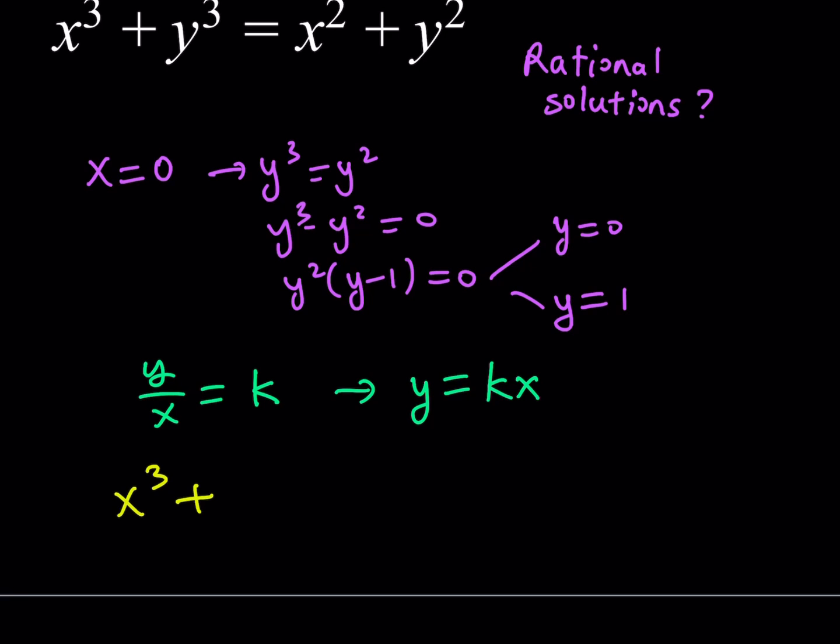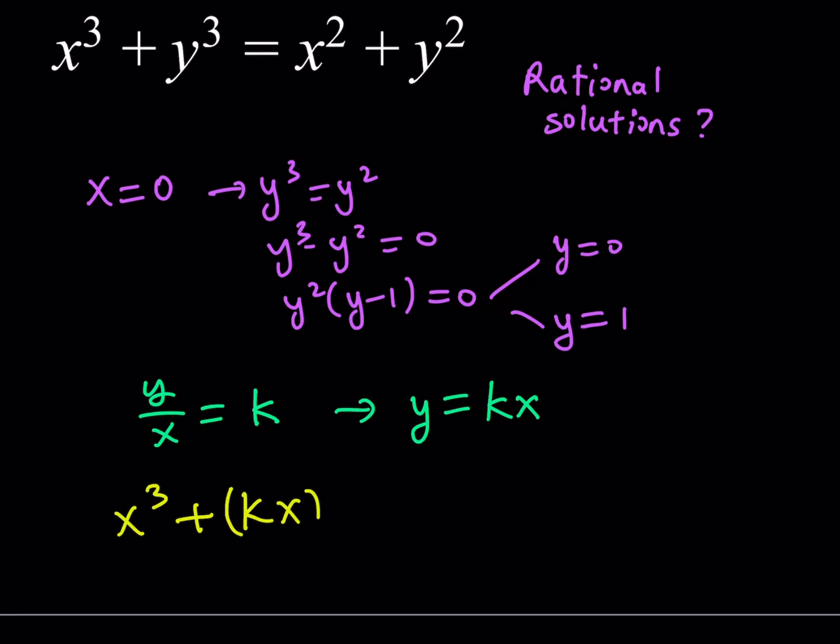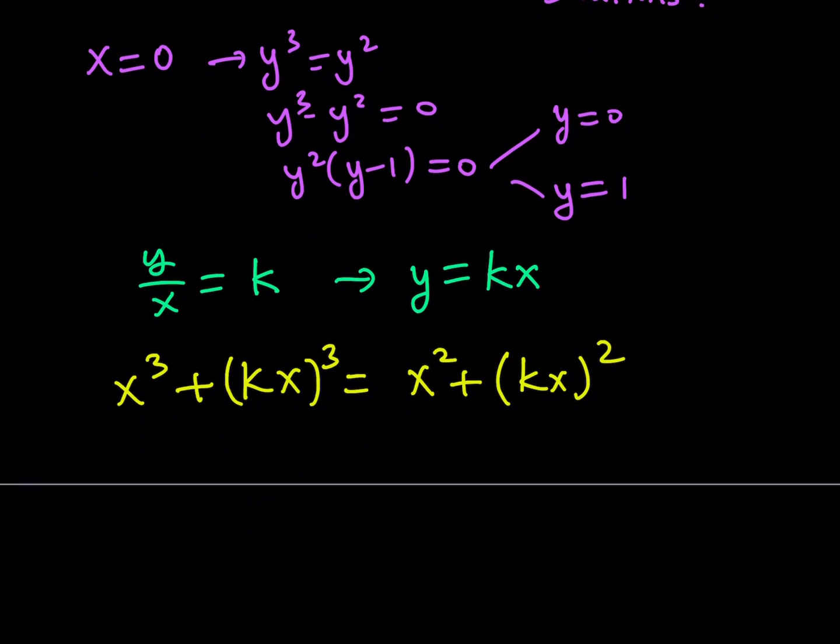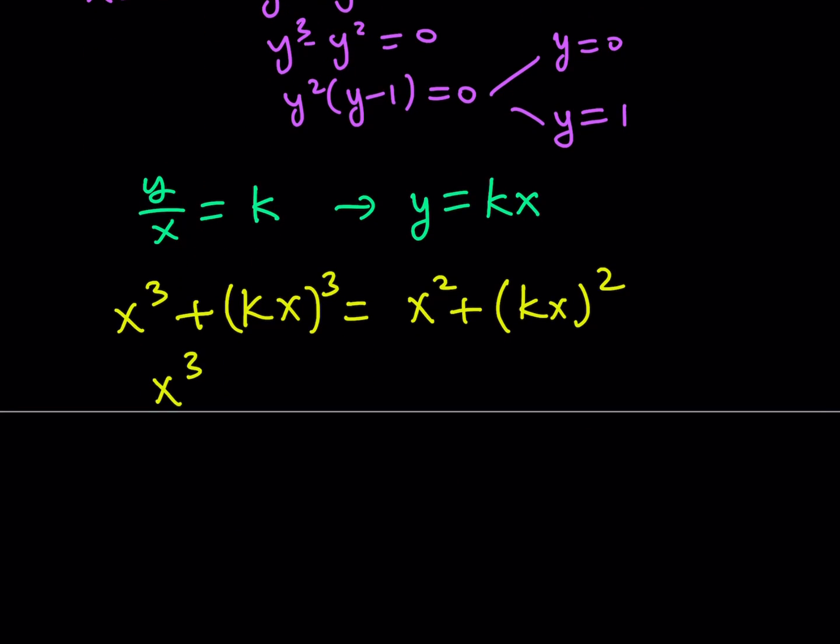So we have x cubed and then plus y cubed. So I'm going to replace y with kx cubed. And then on the right-hand side, I have x squared plus the quantity kx squared. Let's expand and simplify. This is going to be x cubed plus k cubed x cubed is equal to x squared plus k squared x squared. Now, one of the things we can do, and that's why this method works, is we're able to factor out an x cubed so that we can have k as a parameter. So we can pull out an x cubed here, and then we're going to have 1 plus k cubed. And same thing on the right-hand side. We can pull out x squared and end up with 1 plus k squared.